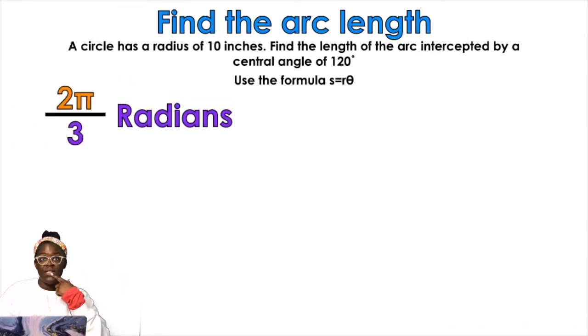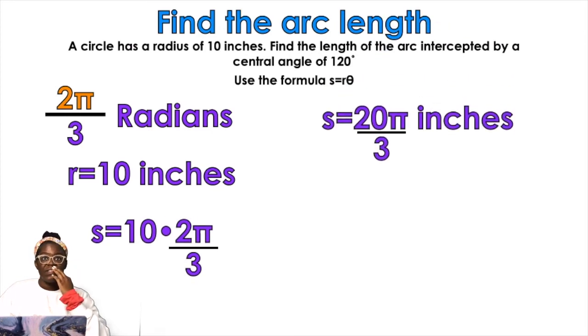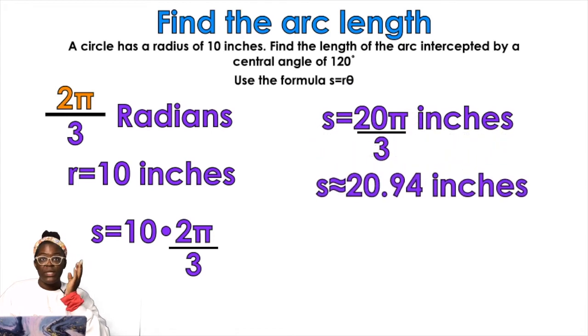We're gonna take that and use our formula. So 2 pi over 3 comes in. Our formula is s equals r theta. So theta is 2 pi over 3 and r is 10. We multiply those by each other. 10 times 2 pi over 3. I'm gonna get 20 pi over 3 inches or approximately 20.94 inches if I round to two decimal places. It's really that easy.